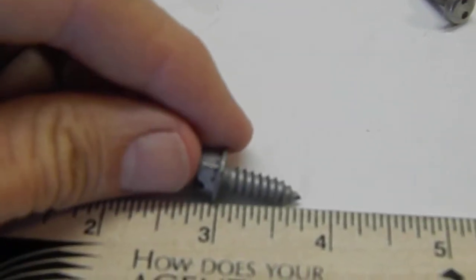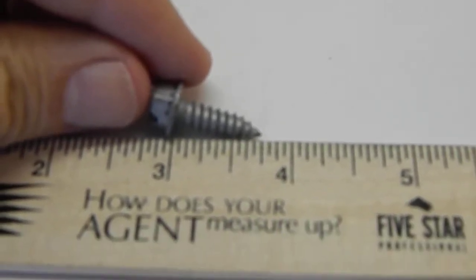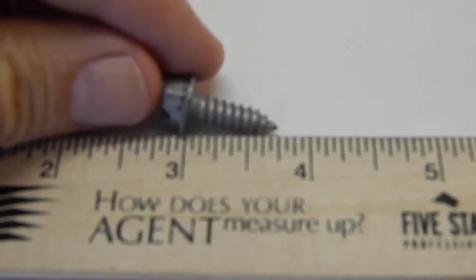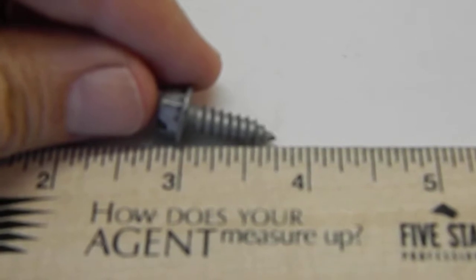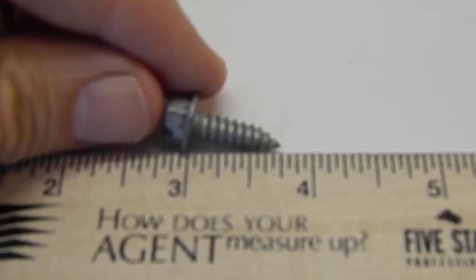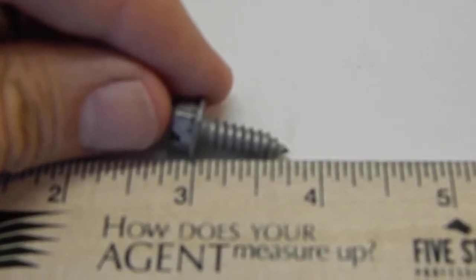To measure it, start with the bottom of the head. Just use a regular ruler and see how long it is to the tip. This one's about three quarters of an inch. Close enough for our needs.